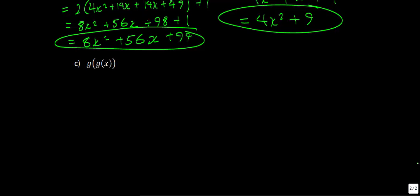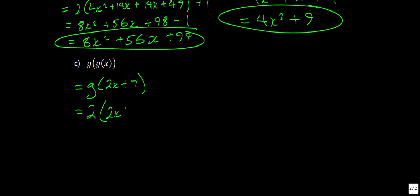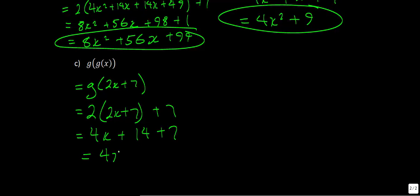For g of g of x, g of x is 2x plus 7 and we're putting it into itself. We start with g of 2x plus 7. Everywhere we see an x in g, we put in 2x plus 7: 2 times 2x plus 7, plus 7. Using the distributive property gives 4x plus 14 plus 7. The 14 and 7 are like terms, so the final answer is 4x plus 21.